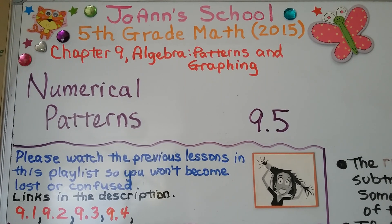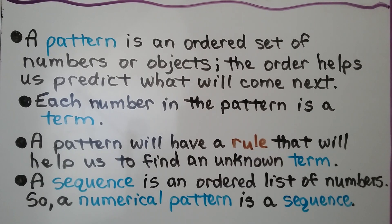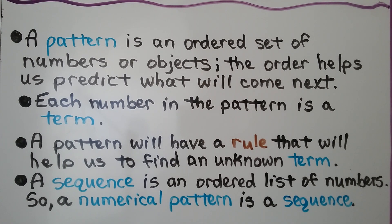Lesson 9.5: Numerical Patterns. A pattern is an ordered set of numbers or objects, and the order helps us predict what will come next. Each number in the pattern is called a term. A pattern will have a rule that helps us find an unknown term. A sequence is an ordered list of numbers, so a numerical pattern is a sequence.